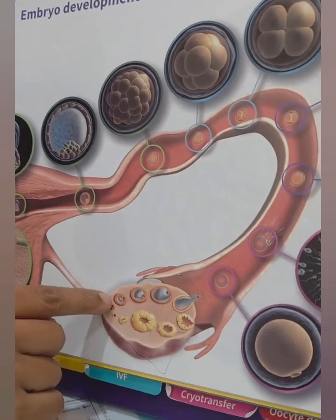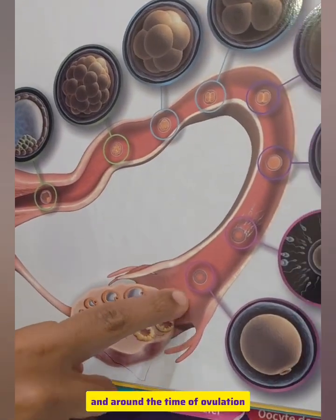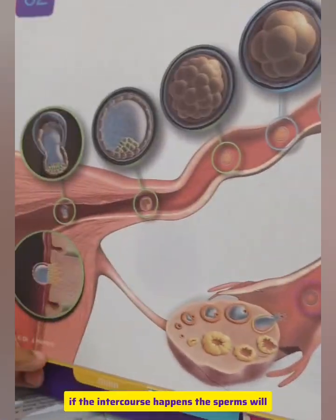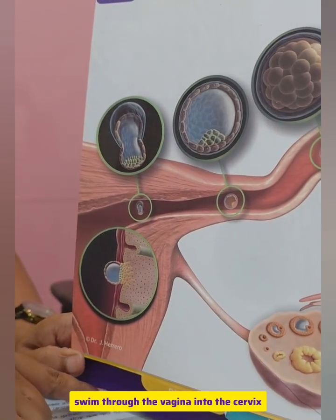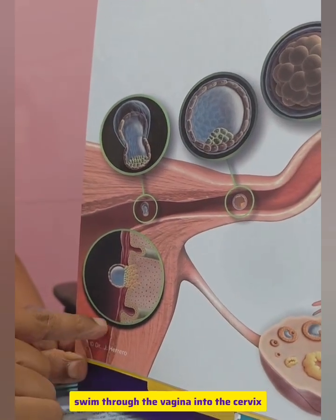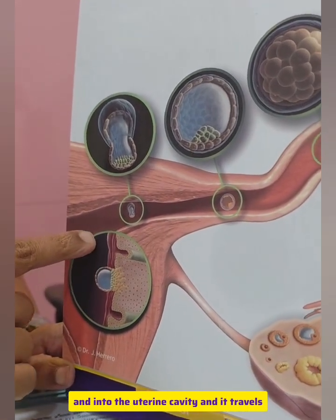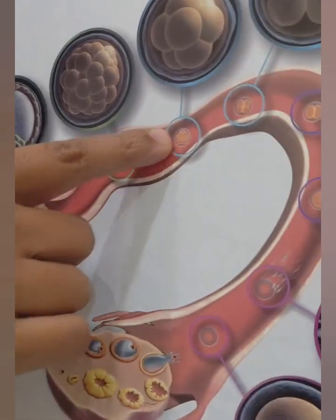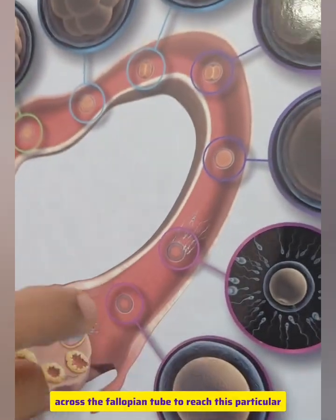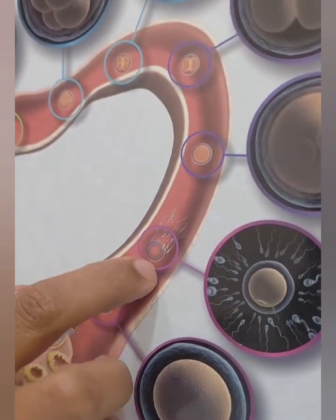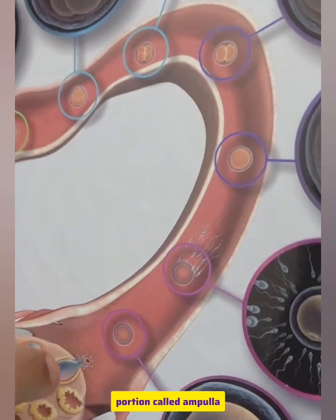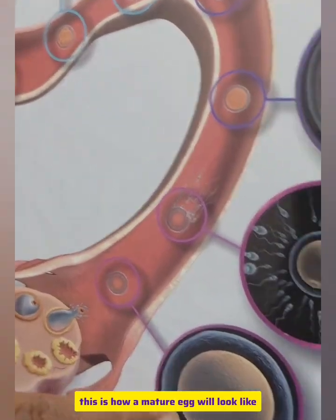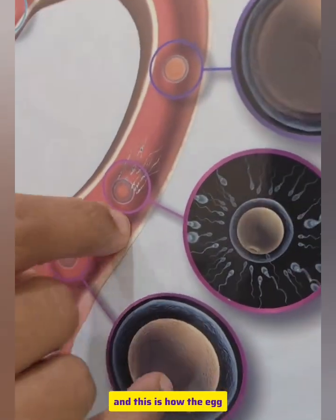Around the time of ovulation, if intercourse happens, the sperms will swim through the vagina, into the cervix, and into the uterine cavity. It then travels across the fallopian tube to reach a particular portion called the ampulla. When the egg is released, this is how a mature egg will look like.